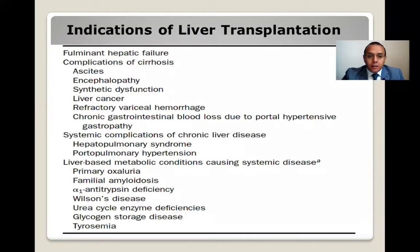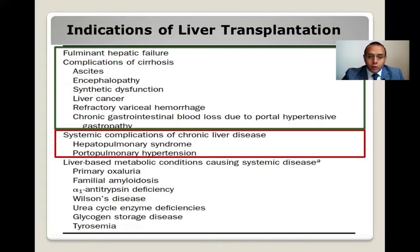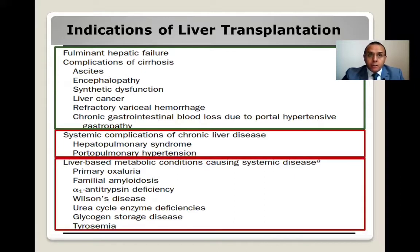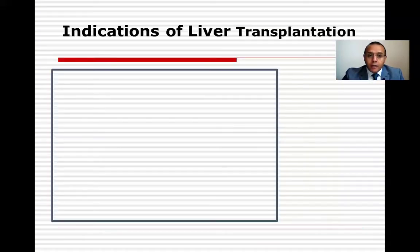This is the list of indications for liver transplantation. The first and second categories are liver failure — either acute liver failure or complications of cirrhosis as chronic failure. The third and fourth categories are associated with preserved synthetic liver function — meaning no liver failure.